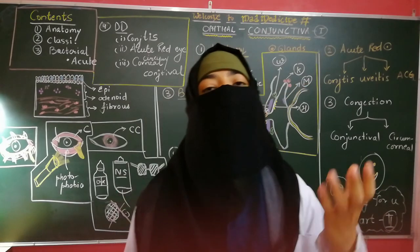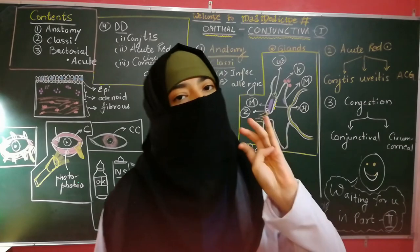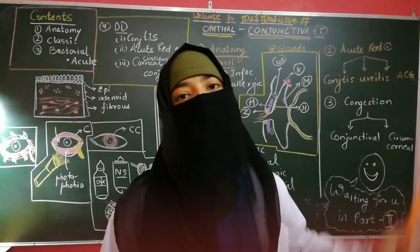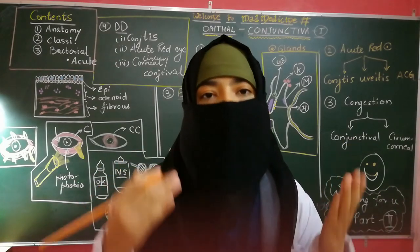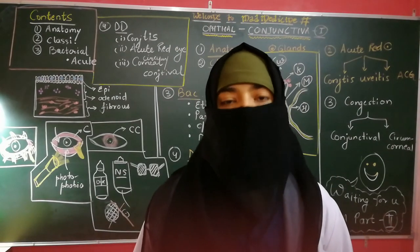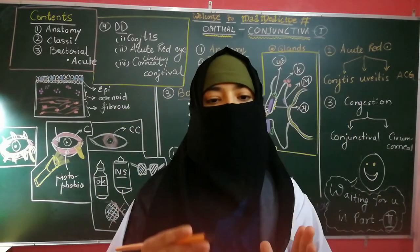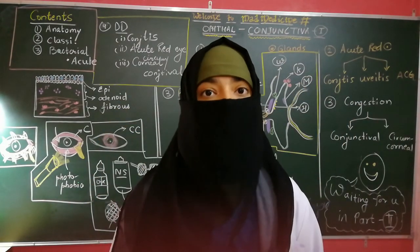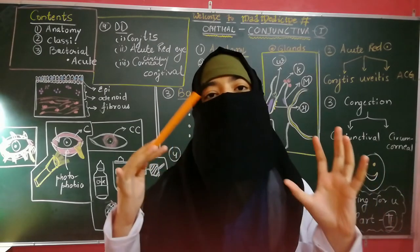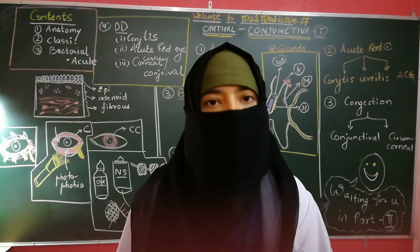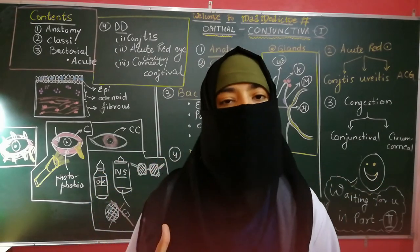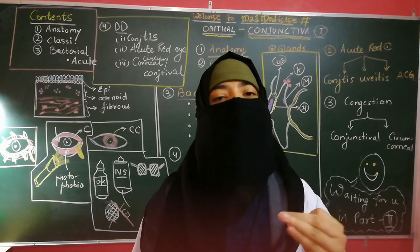Now for acute red eye: there are three important conditions — conjunctivitis, uveitis, and acute angle closure glaucoma (ACG). Onset in conjunctivitis and uveitis is gradual, while in ACG it is sudden. Pain is minimal in conjunctivitis and uveitis but very acute and severe in ACG. Vision is not markedly diminished in the first two conditions but is markedly diminished in ACG.